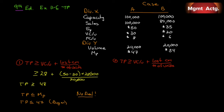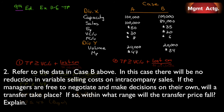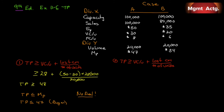For Case B, there will be no reduction in variable selling costs on intercompany sales. For the seller, the transfer price must be greater than or equal to variable cost per unit — which is $20 — plus lost contribution margin. Under Case B we have 20,000 units of spare capacity, exactly what division Y needs, so we don't have to redirect anything. There is no lost contribution margin, so the transfer price simply must be greater than or equal to $20.